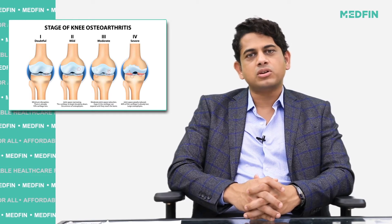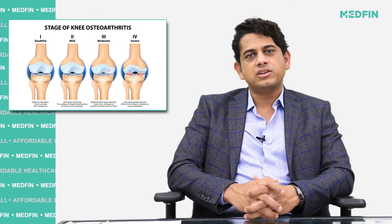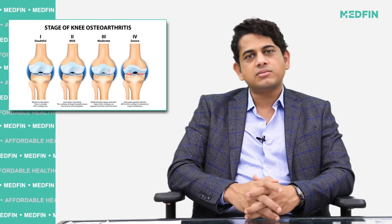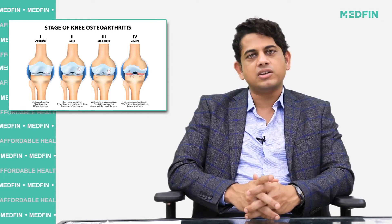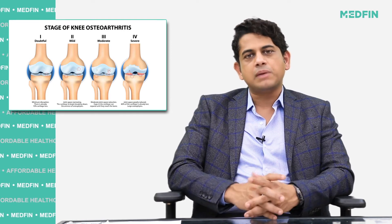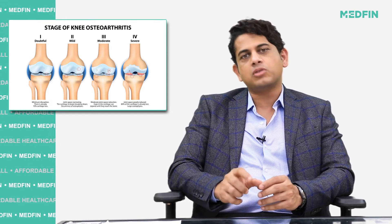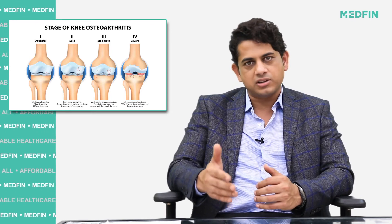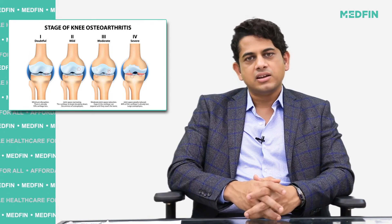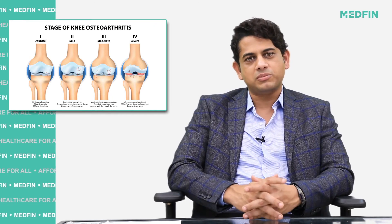For grade 4 or patients having advanced osteoarthritis, we usually suggest surgery. Nowadays we do unicondylar knee replacement surgery, which is a type of advanced knee replacement surgery where only the condyle or the damaged part of the joint is replaced with artificial implants. The last and final gold standard treatment is joint replacement surgery.